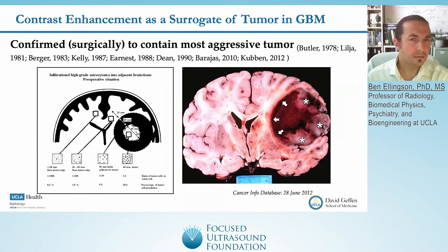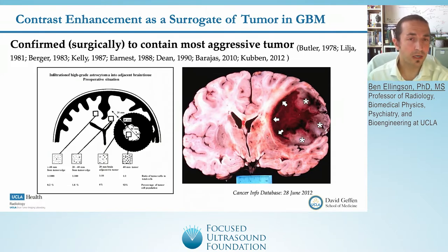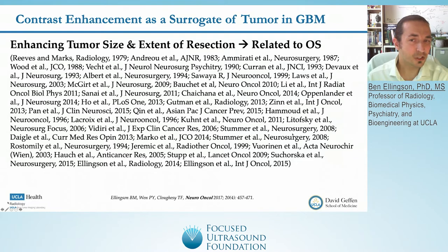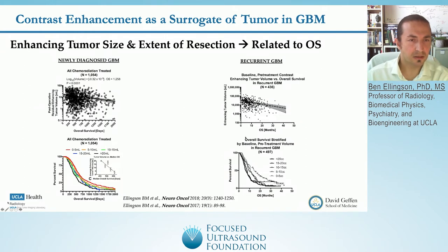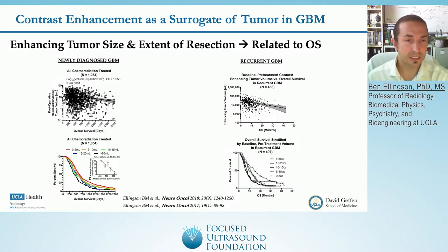We've been using contrast enhancement as a surrogate of tumor burden in GBM for quite a long time. It was confirmed surgically in a variety of studies to contain the most aggressive areas of the tumor. Contrast-enhancing tumor size and the extent of resection of that contrast-enhancing component is highly correlated with overall survival and prognosis. This is a meta-analysis pooling data from thousands of patients in both the newly diagnosed and recurrent GBM setting, showing that the larger the tumor burden after surgery, the shorter the overall survival.